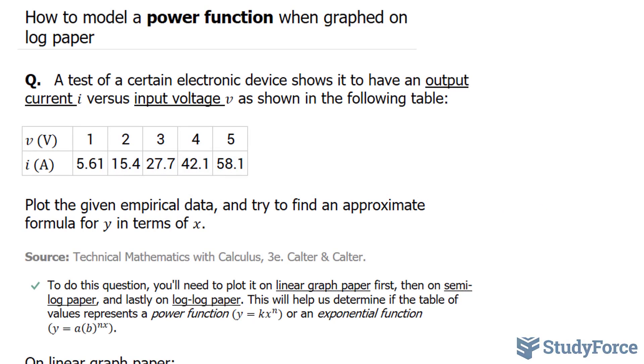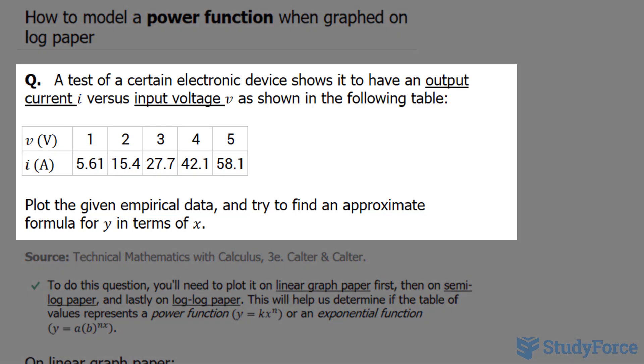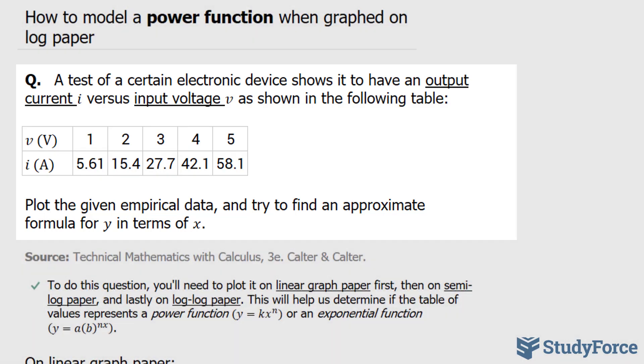In this video, I'll show you how to model a power function when graphed on log paper. The question reads, a test of a certain electronic device shows it to have an output current represented as i versus input voltage v as shown in the following table. Plot the given empirical data and try to find an approximate formula for y in terms of x.